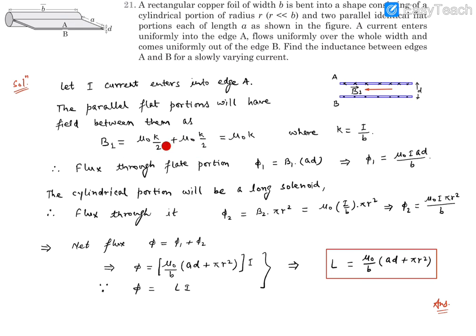It will be added because of the two, so it becomes μ₀ times k, where k is the current per unit length. The length it is covering is b, so k is basically I/b. Therefore, B₁ equals μ₀I/b.